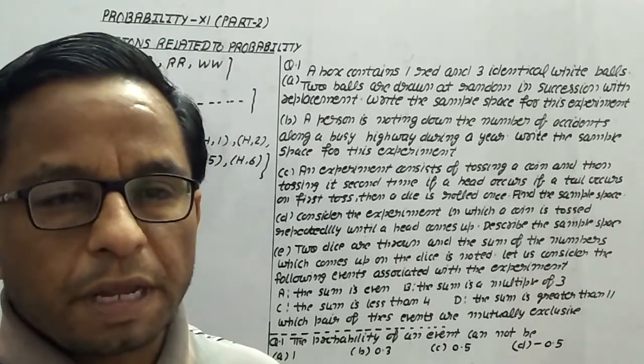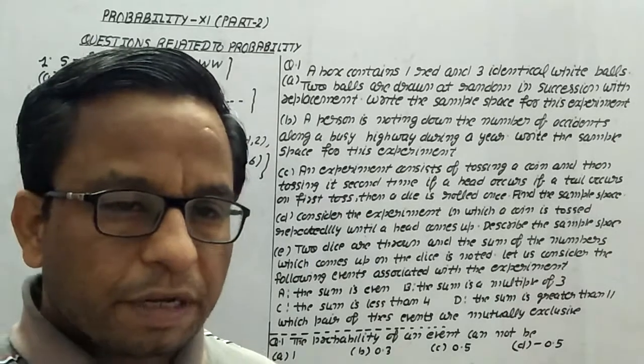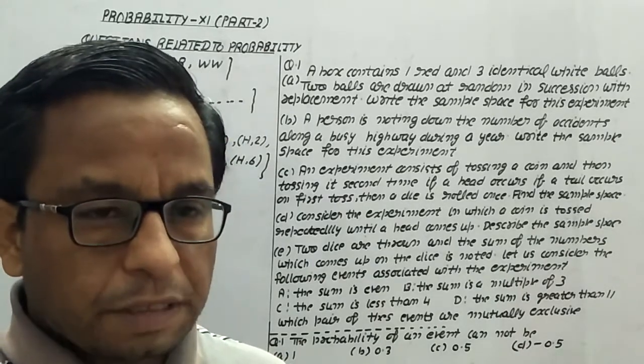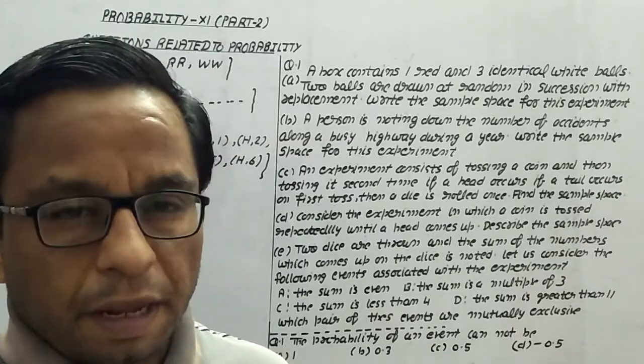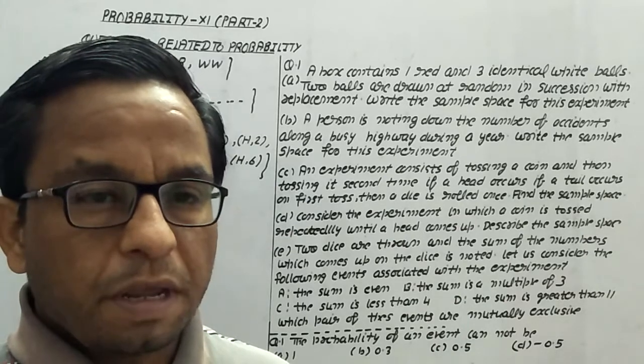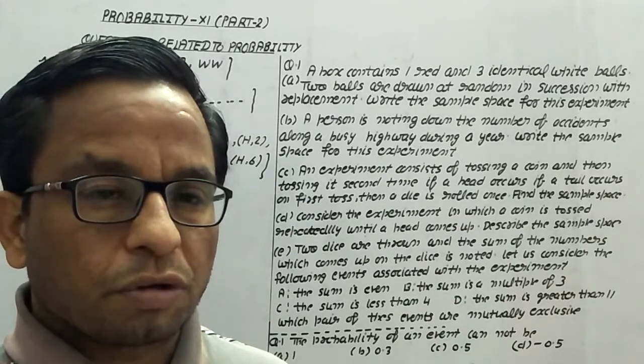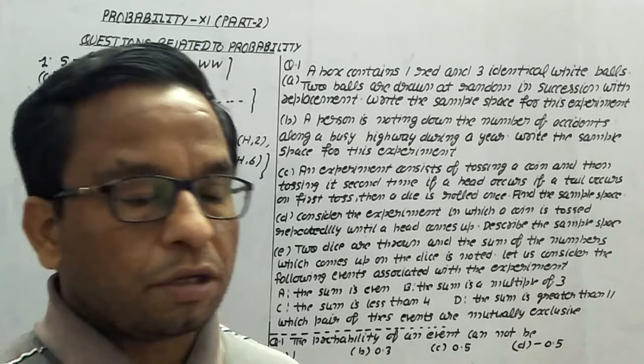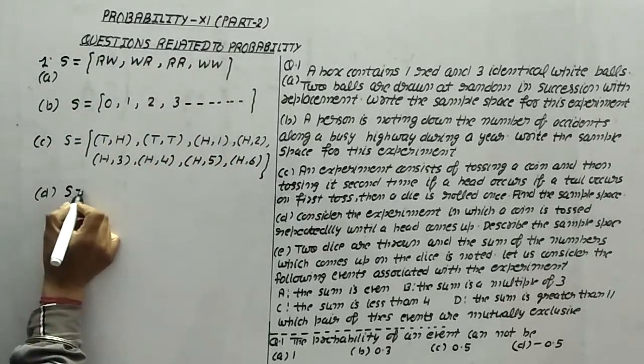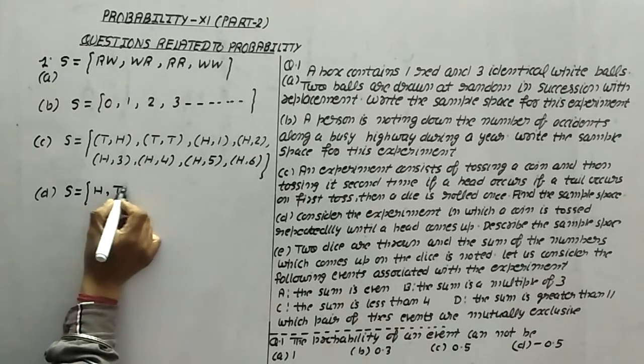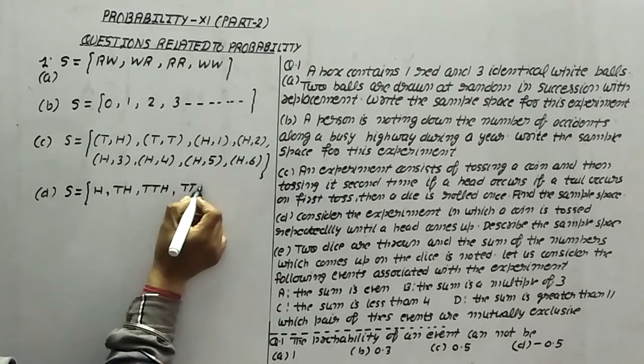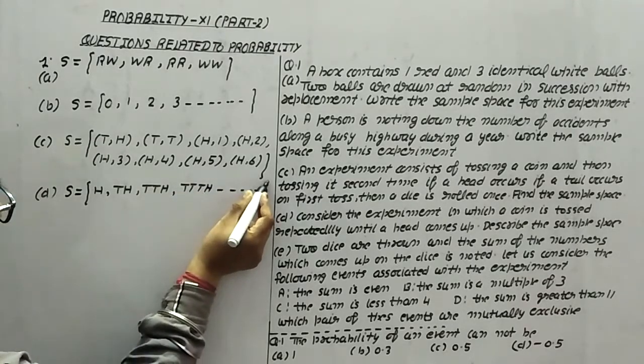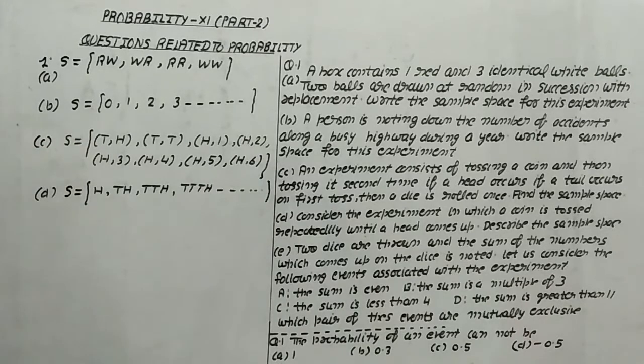It may be that in the first attempt head is coming, or first attempt tail is coming and then head is coming, or tail-tail-head, or four times tail then head, and so on. The sample space will be {H, TH, TTH, TTTH, ...}.